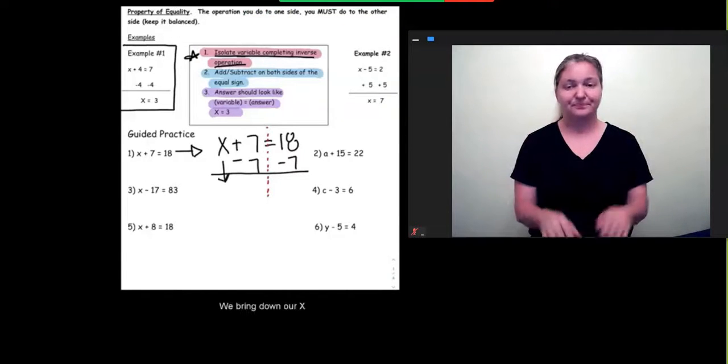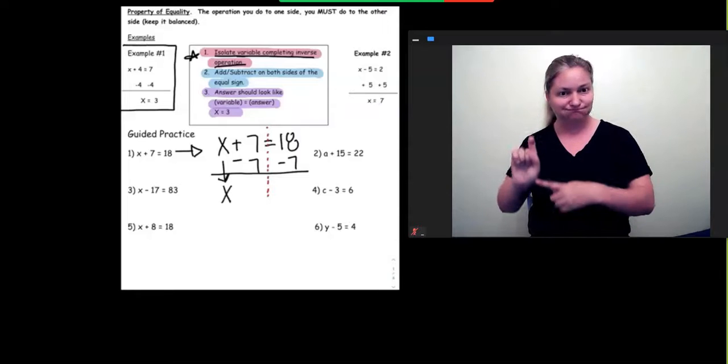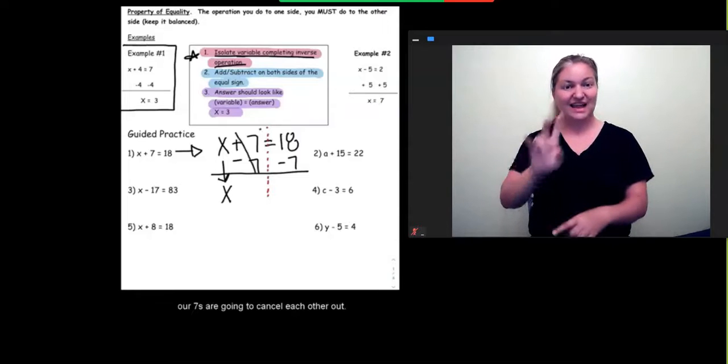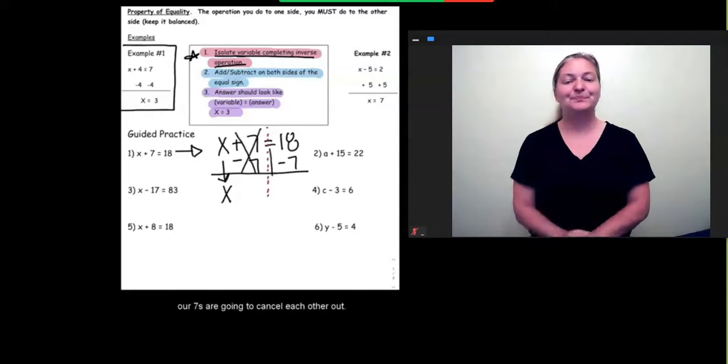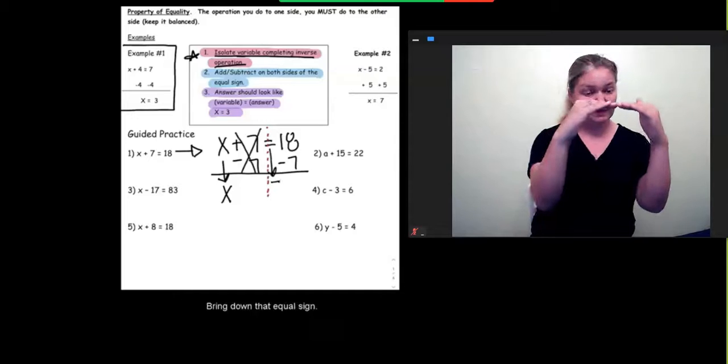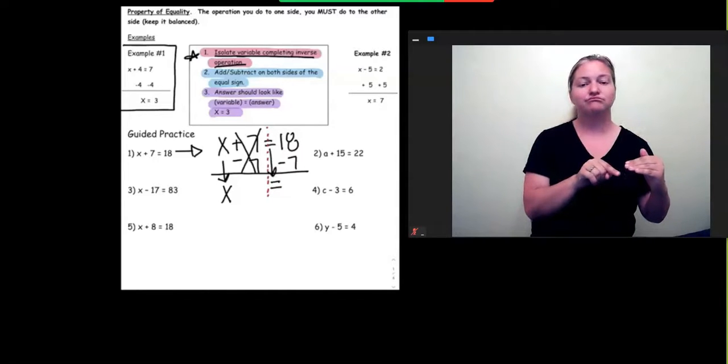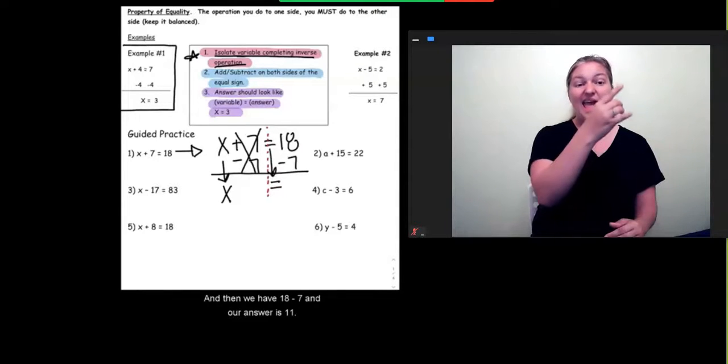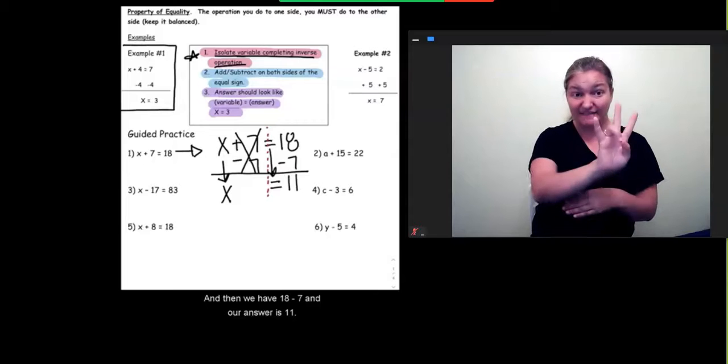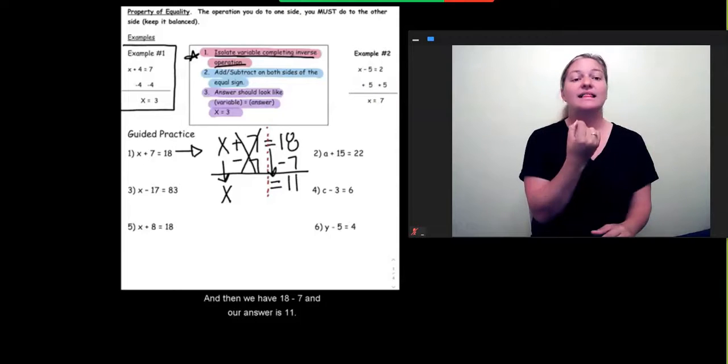We bring down our x. Our 7s are going to cancel each other out. We bring down that equal sign. And then we have 18 minus 7. And our answer is 11.